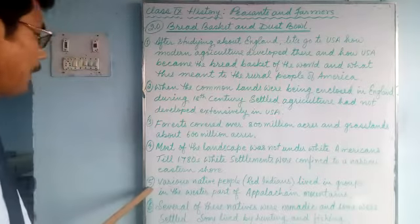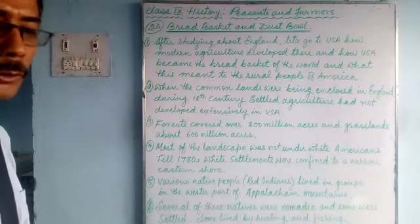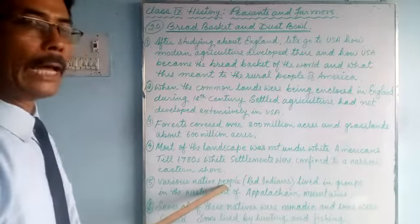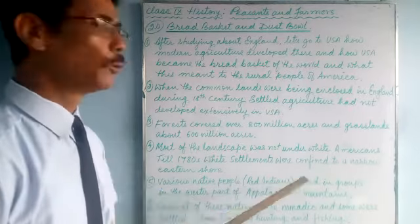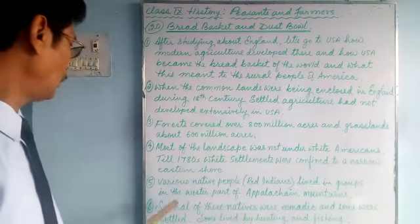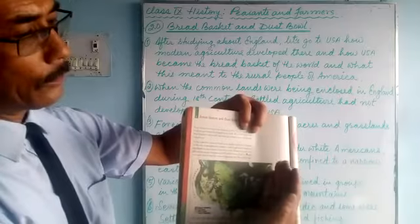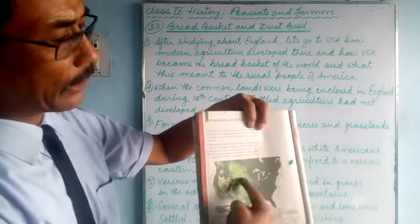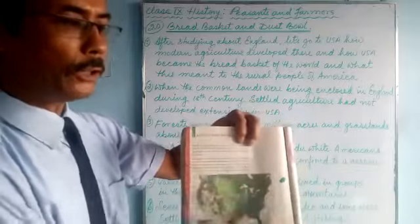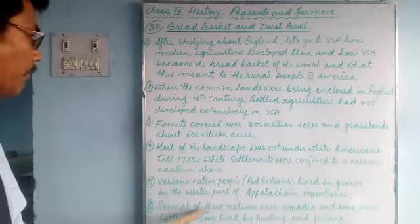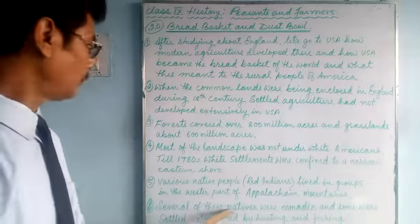Various native people — called Red Indians — lived in groups in the western part of the Appalachian Mountains. Various groups are listed in your book; you can go through them. These native people, the original inhabitants of America, lived towards the western side of the Appalachian Mountains, not towards the east.